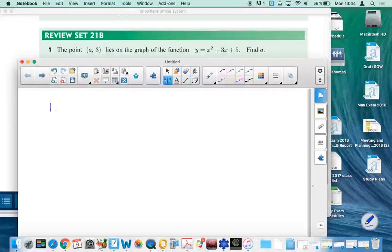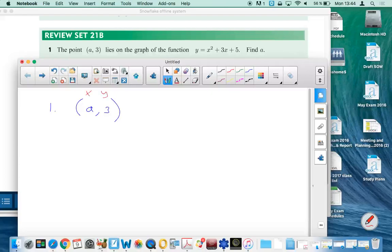Question one is asking to find A. You have to spot that this is an X and this is a Y. This is the kind of question where you know what Y is and you need to find X.